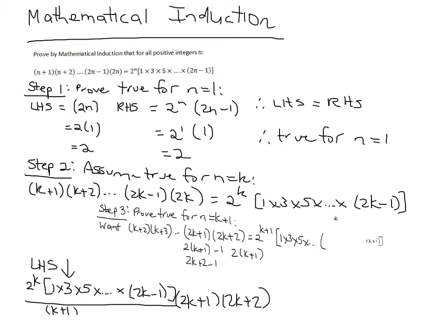So we're using the assumption from part 2, which is here. And we're saying, if we know that k plus 2, k plus 3, up to 2k, equals this, divided by that, then I'm going to substitute that in what we want here.